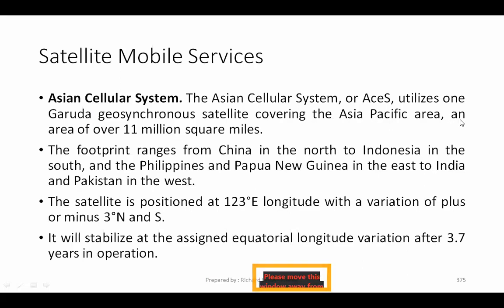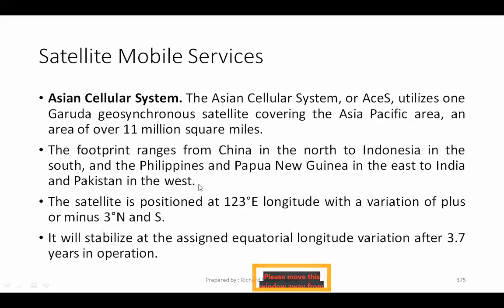This satellite covers the Asia-Pacific area of about 11 million square miles. The footprint extends from China in the north to Indonesia in the south, from the Philippines and India in the east to India and Pakistan in the west. It's not just within a few kilometers — it actually covers entire countries and the whole continent.